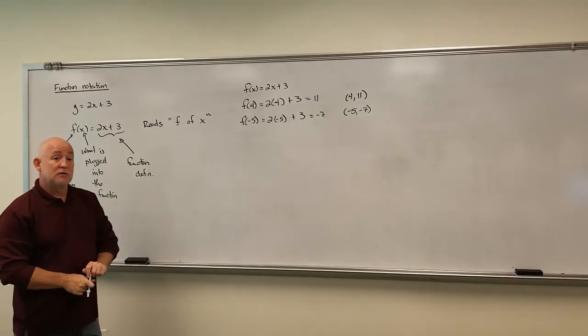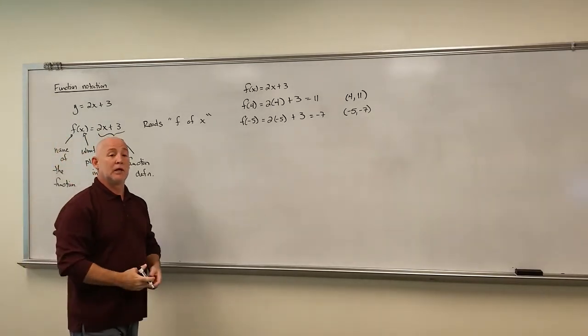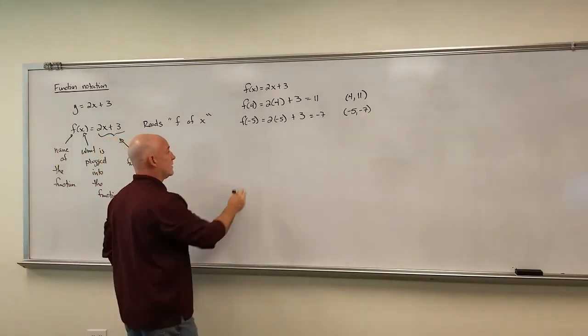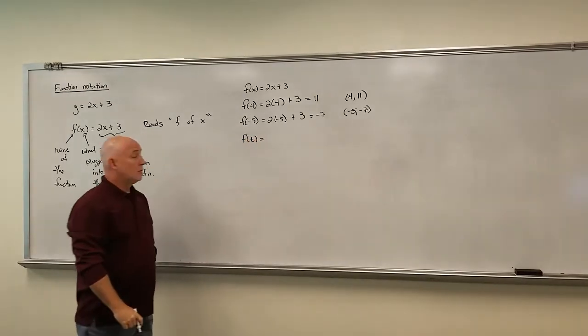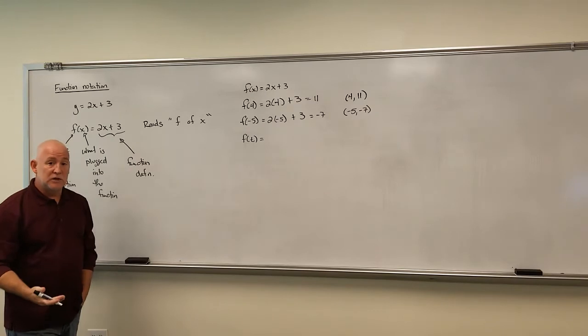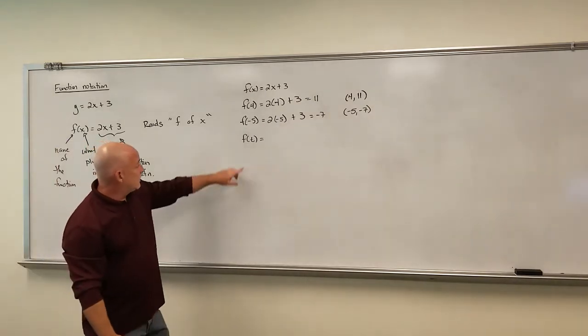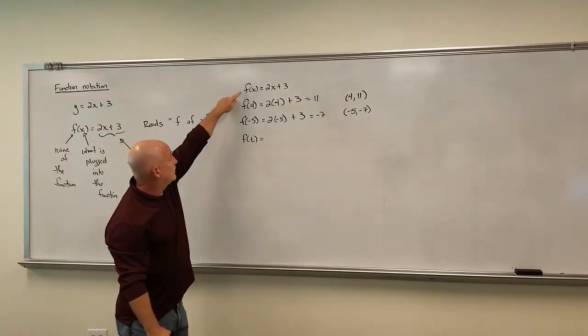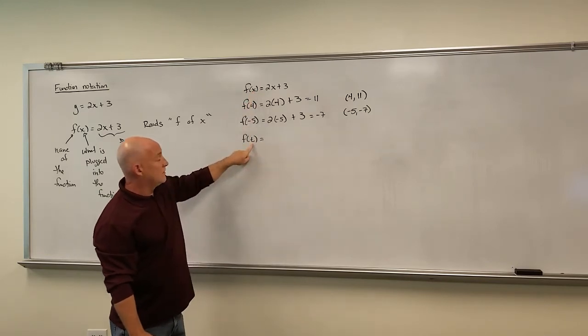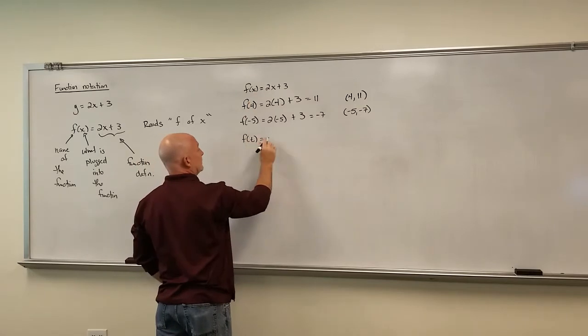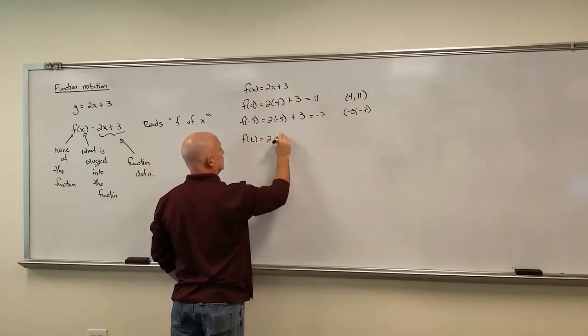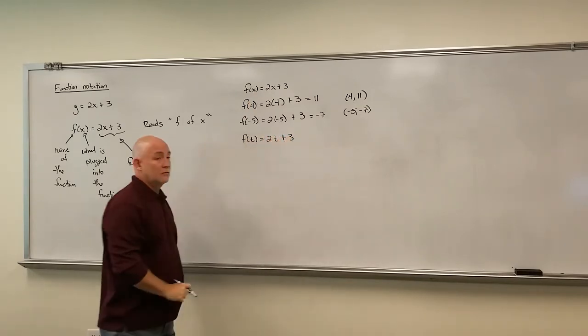Now the next thing about functions is I actually don't care what you plug into them. And it can get kind of messy sometimes. Like what would f of t be? Well, just because there's a t there doesn't change the concept. Concept says find a function named f, there's one, and everywhere there's a spot, I'm going to replace it with this. So in this case, I'm replacing all the x's with t's. So that would just be 2t plus 3.